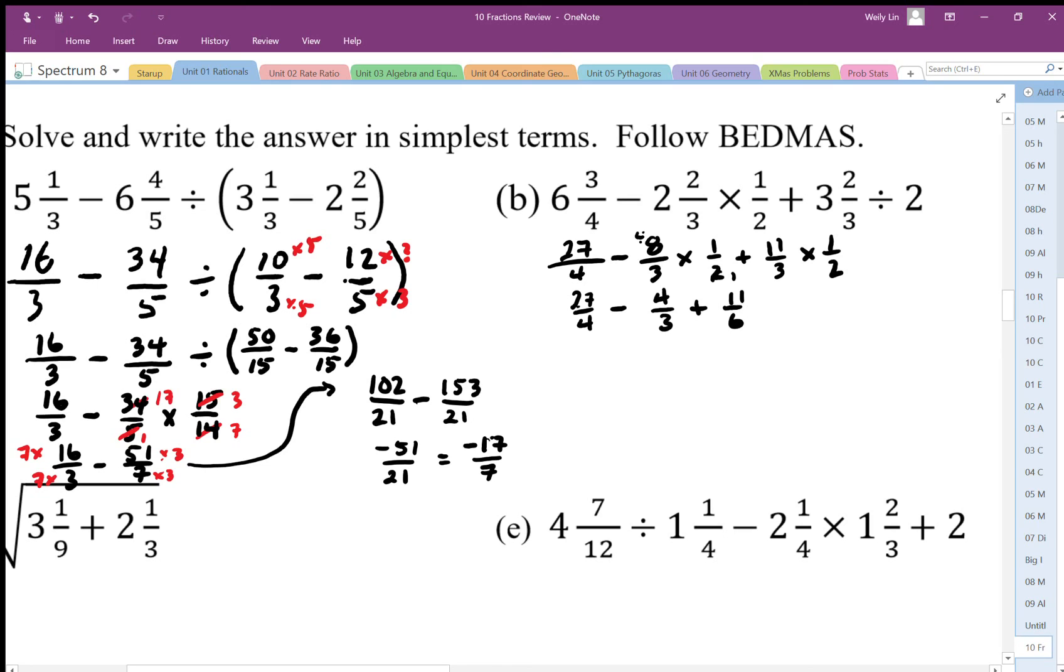So the common denominator here is going to be 12. To work out this, we need to show the factors: times 3 times 3, this is going to be times 4 times 4, this will be times 2 times 2.